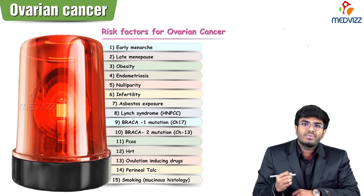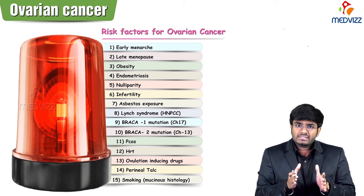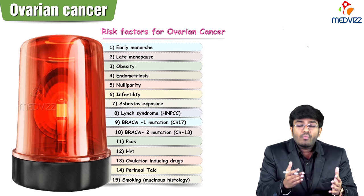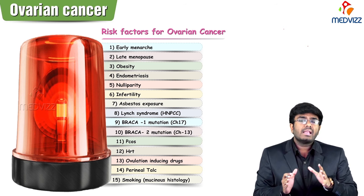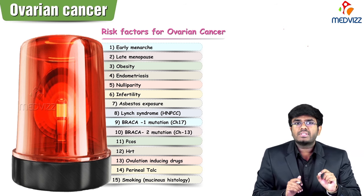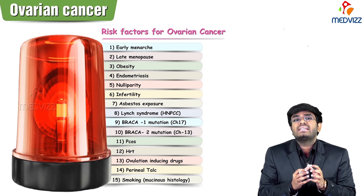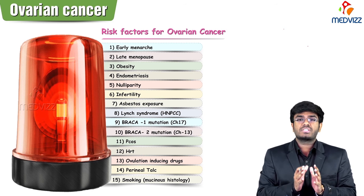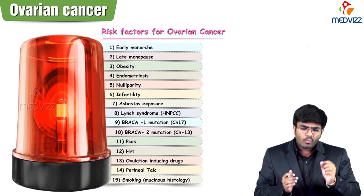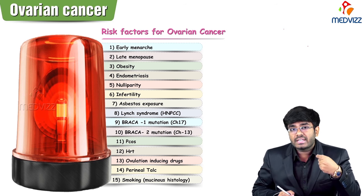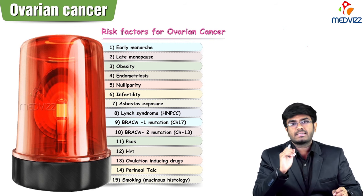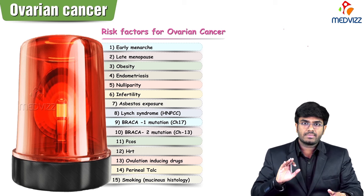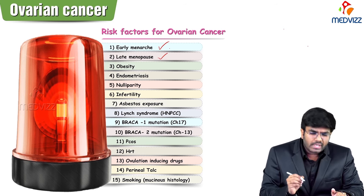Now let's discuss the risk factors for ovarian cancer. There are 15 risk factors predisposing a female to developing ovarian cancer. The key concept is: the more the ovary is functioning, the more it is stimulated, the more ovulations occur, the more stress the ovary is under. All these risk factors somehow keep the ovary under stress. Let's start with early menarche and late menopause.